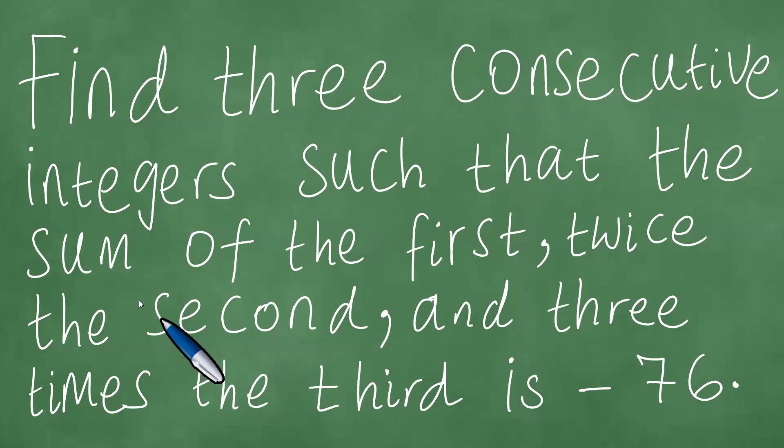We are looking at this word problem in front of us, focusing on solving this problem about consecutive integers. We are told through this problem that we need to find three consecutive integers such that the sum of the first, twice the second, and three times the third is minus 76.